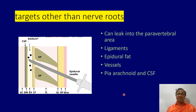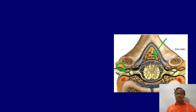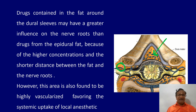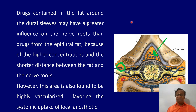If you give 15 ml into the epidural space, it can go to the nerve root, into the fat, or into the vessels. Drugs contained in the fat around the dural sleeves may have a greater influence because of the short distance to the nerve roots. This area is also found to be highly vascularized, so vascular uptake is also more pronounced there.